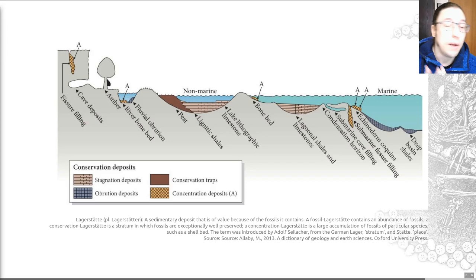Often, as I've already alluded to, you get exceptional preservation in entire layers of rock or sites. And these fossil-bearing formations are termed Lagerstätten. It's a German word meaning place of storage. So Lagerstätten is the plural, Lagerstätte is the singular. I've put a definition on the slide for you here in case it's useful. A sedimentary deposit that is of value because of the fossils it contains. So this also highlights that a fossil Lagerstätte can come in two forms.